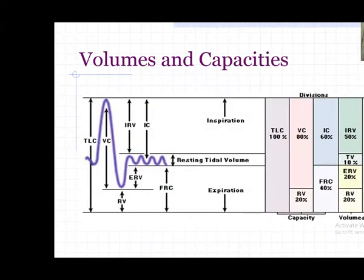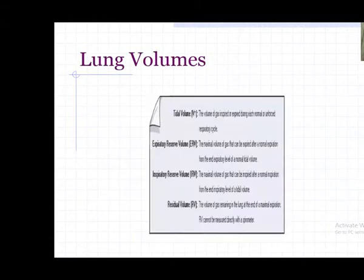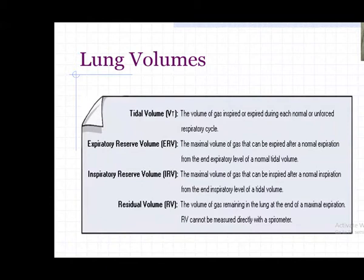Before starting spirometry, you should know there are four lung volumes and four capacities. Capacities are formed from the summation of two volumes. For instance, residual volume combined with expiratory reserve volume forms functional residual capacity. Inspiratory reserve volume combined with tidal volume forms inspiratory capacity. All of them combined give total lung capacity. So there are four capacities and four lung volumes.